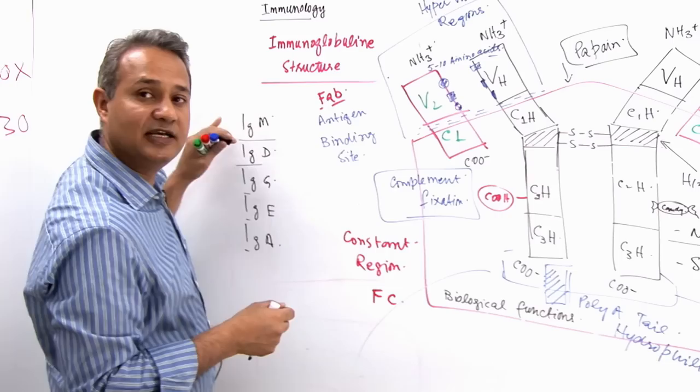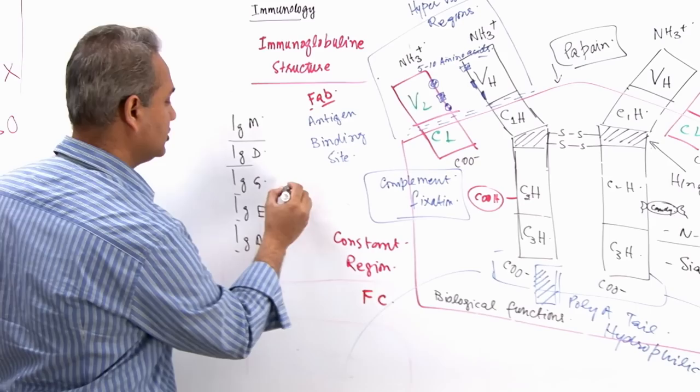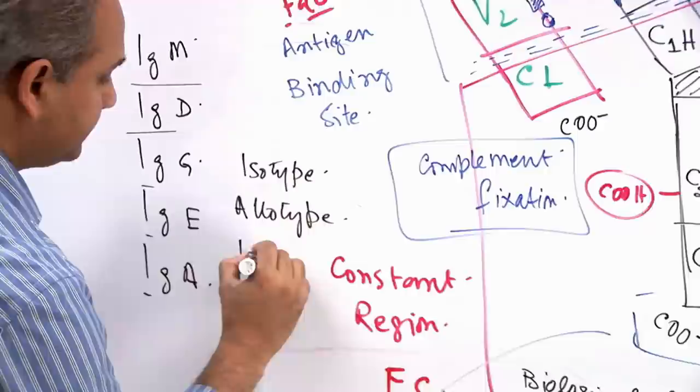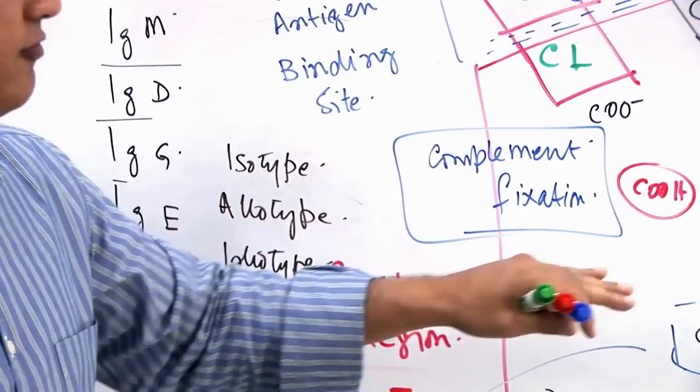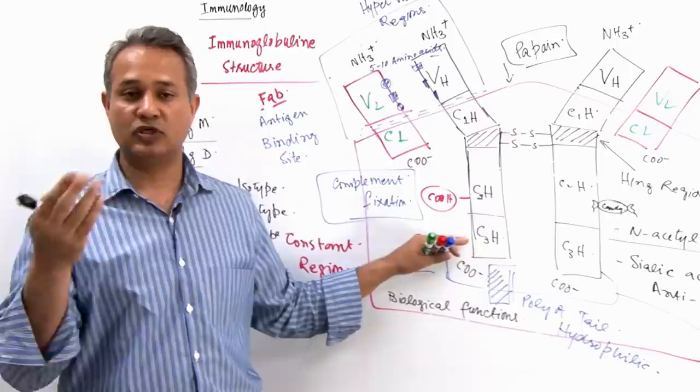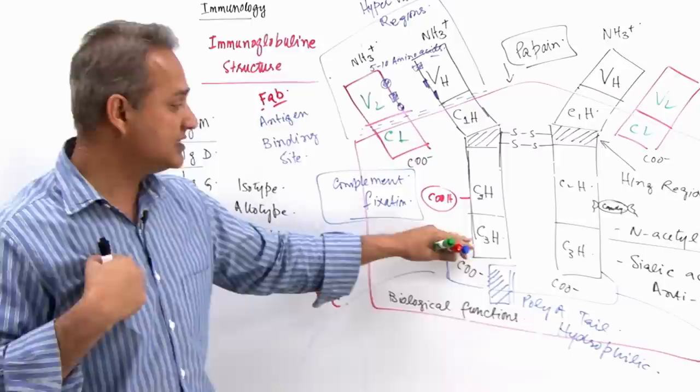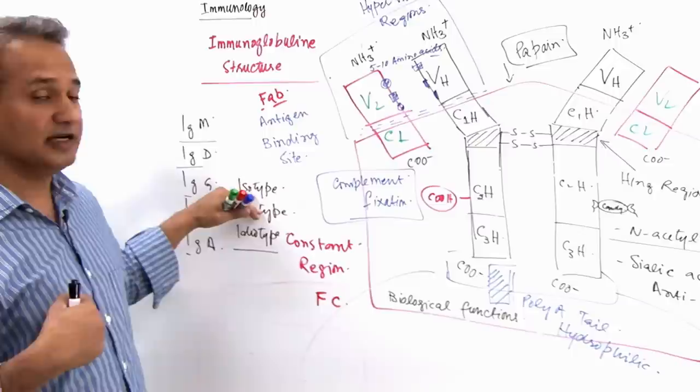So, what is isotype? So, let me talk about that. Isotype, allotype and idiotype. Isotype means different types of immunoglobulin classes or different classes of immunoglobulin within one individual of a species. So, I belong to a species human. I am one individual and within myself, I would have immunoglobulin M, D, G, E and A. These are my isotypes. Immunoglobulin within one individual of a species.